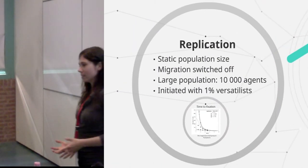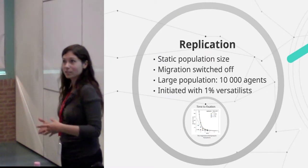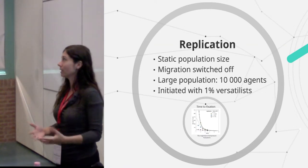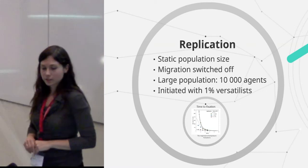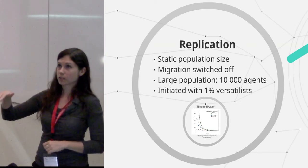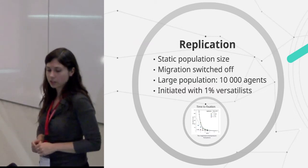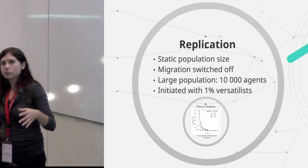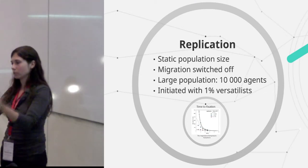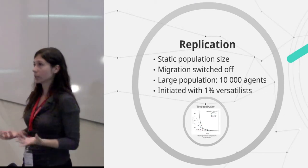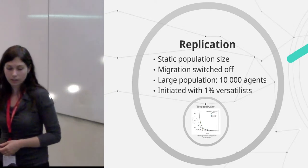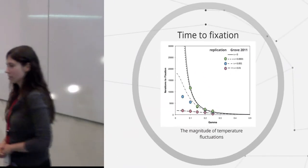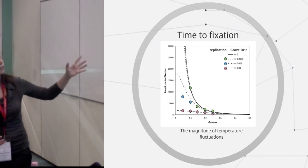Okay. And the first thing I did is I tried to verify if my model actually stands the way, if it's actually doing what I think it's doing. And the best way to do that was to replicate the previous equation-based model. So in order to do that, I had to get the population size into a static one. So there's no population growth. And that migration is completely switched off because that's not in the original model. In order to kind of replicate the frequency, the fact that people don't really die off or anything like that, I just use a very large population. So that should limit the stochasticity. And I just did the same. I initiated the population with one person versatilist.